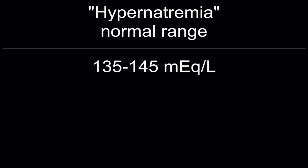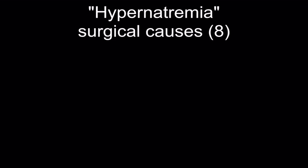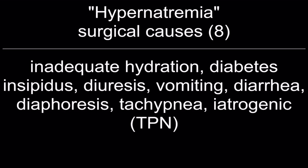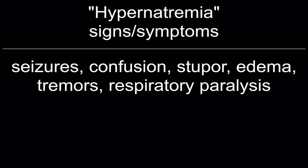Normal sodium range: 135 to 145 milliequivalents per liter. Surgical causes of hypernatremia: inadequate hydration, diabetes insipidus, diuresis, vomiting, diarrhea, diaphoresis, tachypnea, iatrogenic, or due to total parenteral nutrition. Signs and symptoms of hypernatremia: seizures, confusion, stupor, edema, tremors, respiratory paralysis. Treatment: quarter NS or half NS.